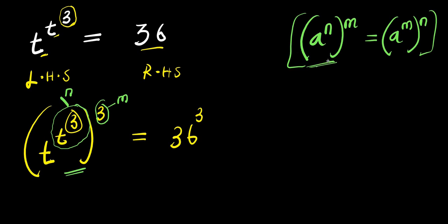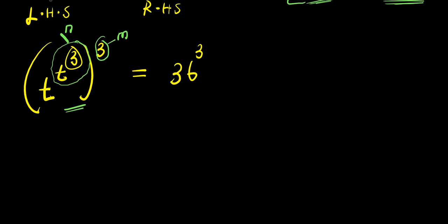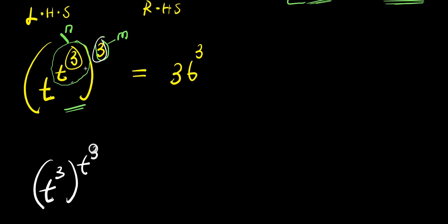Now we are going to modify it using this identity. That means the m will come inside the bracket and the n will come inside. Don't forget that t to the power of 3 is our n and the 3 here is our m. So we are going to have t to the power of m, which is 3, raised to the power of t to the power of 3, which is n. And everything equals 36 to the power of 3.